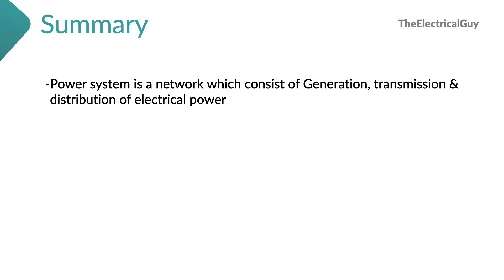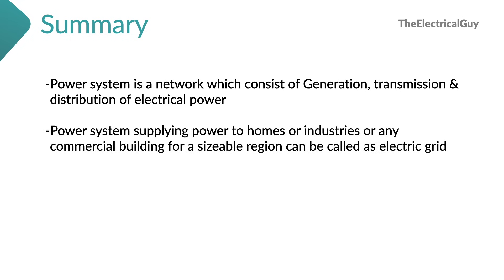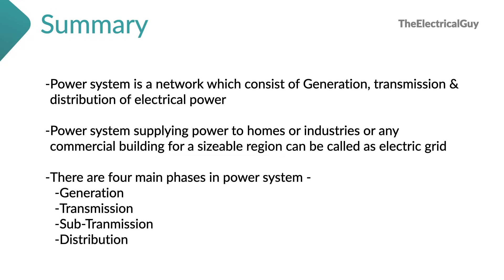To summarize: a power system is a network consisting of generation, transmission, and distribution of electric power. A power system supplying power to homes, industries, or commercial buildings for a sizable region is called an electric grid. There are four main phases in a power system: generation, transmission, sub-transmission, and distribution.